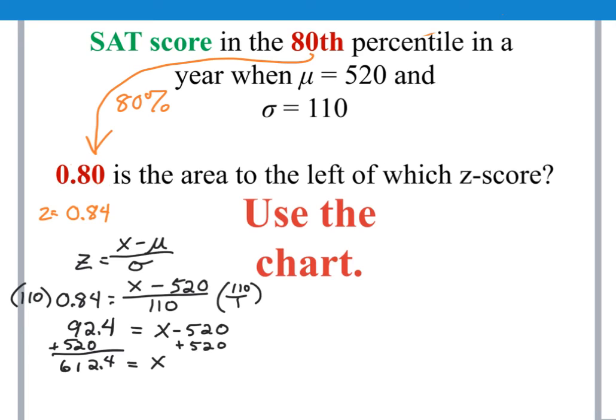Do we round up? Do we round down? Well, it's a 4, so you'd think we would round down. But if you only score 612, you're not truly in the 80th percentile. So to get into the 80th percentile, you would have to score 613. So that is the SAT score that is in the 80th percentile.